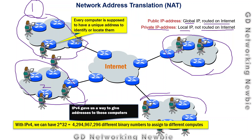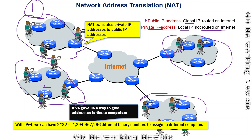When an organization wants to send something to the global internet, they need public IP addresses. Public IP addresses are only assigned when needed. At that point, network address translation is used — typically at the router — and the job of NAT is to translate private IP addresses to public IP addresses.